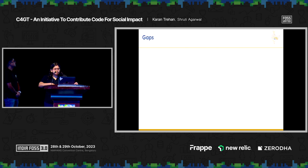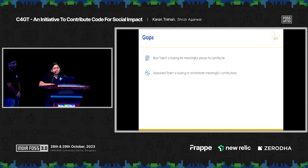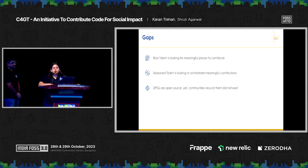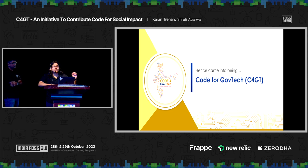We identified these gaps and, based on them, finalized the idea of Code for GovTech. The first gap is raw talent like Janhvi looking for meaningful places to contribute. The second is Abhishek wanting to mentor people like Janhvi. The third is organizations wanting to build a community around their products. The fourth is the rapid growth of DPGs in the upcoming decades. And the last is that no single platform exists for all these personas.